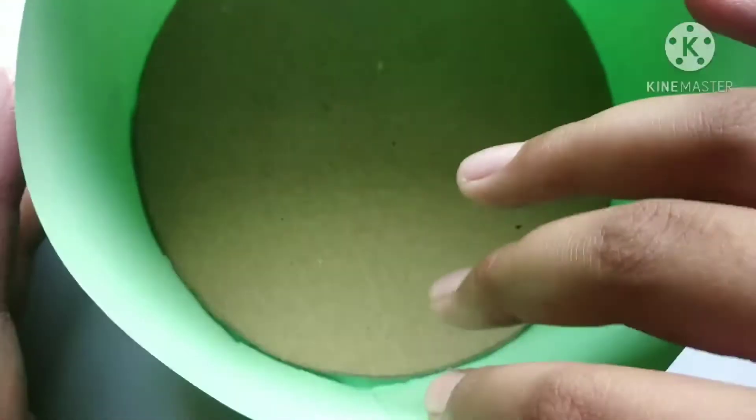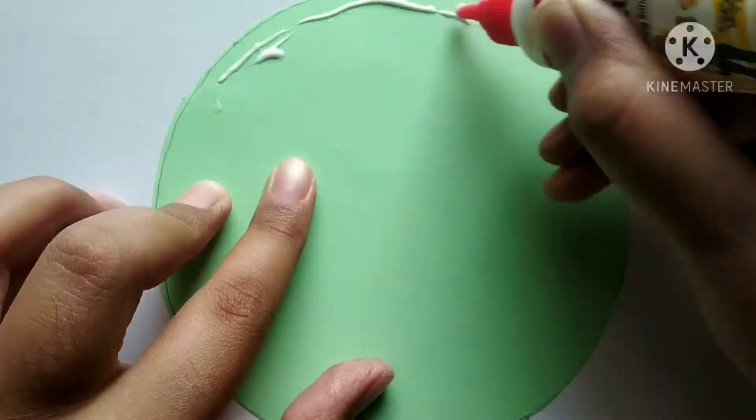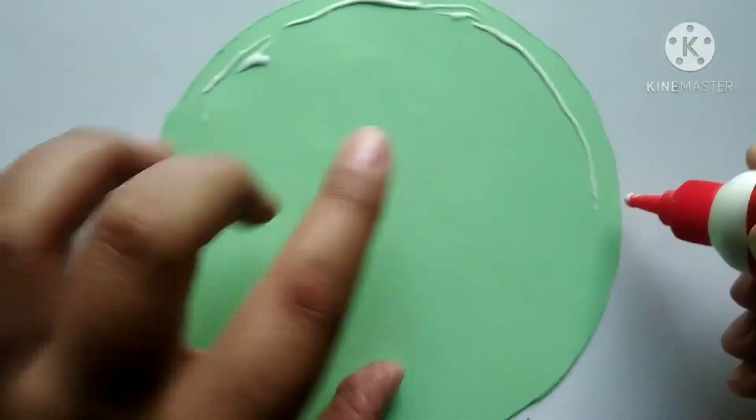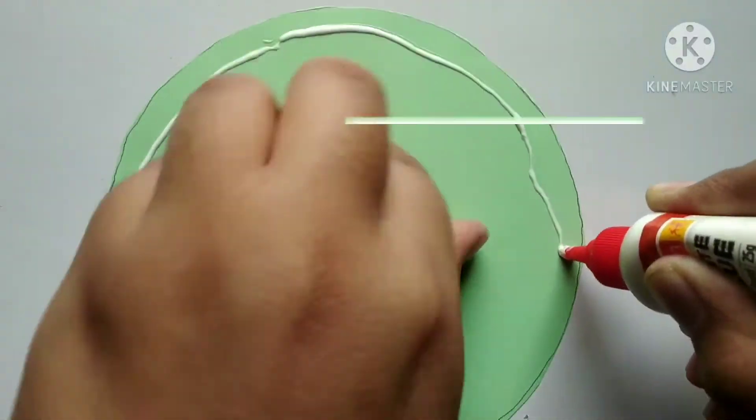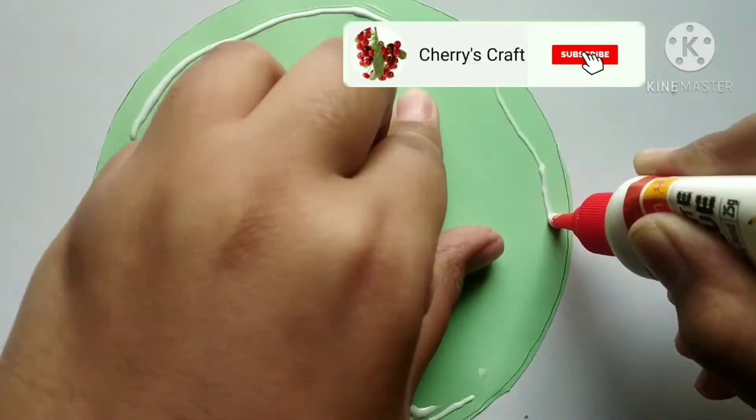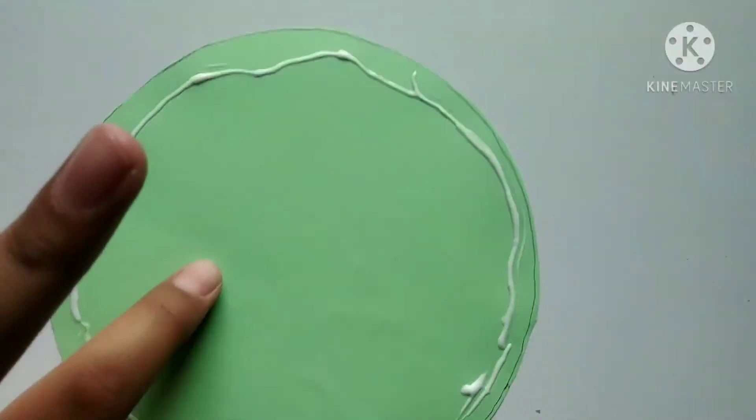Friends, now we need to take one circle at the same measurement and we need to stick it like this.